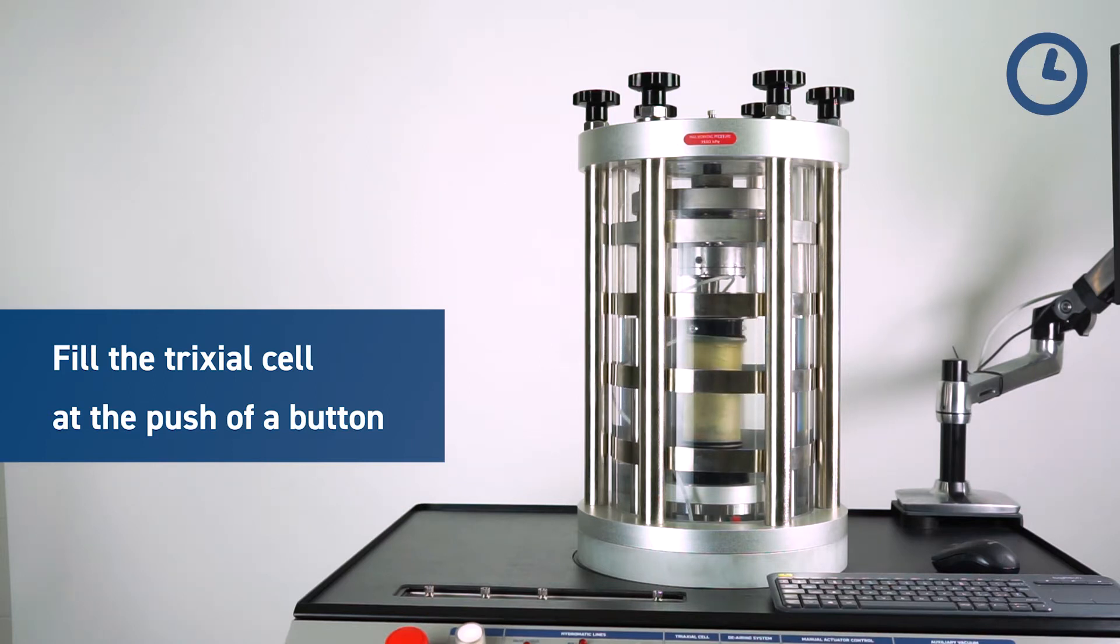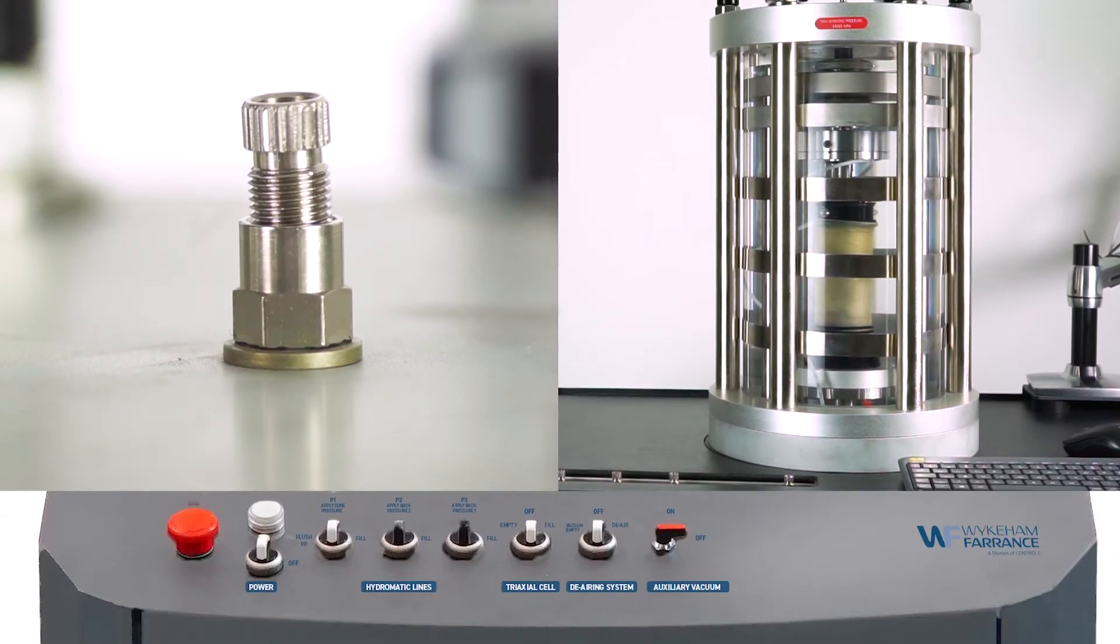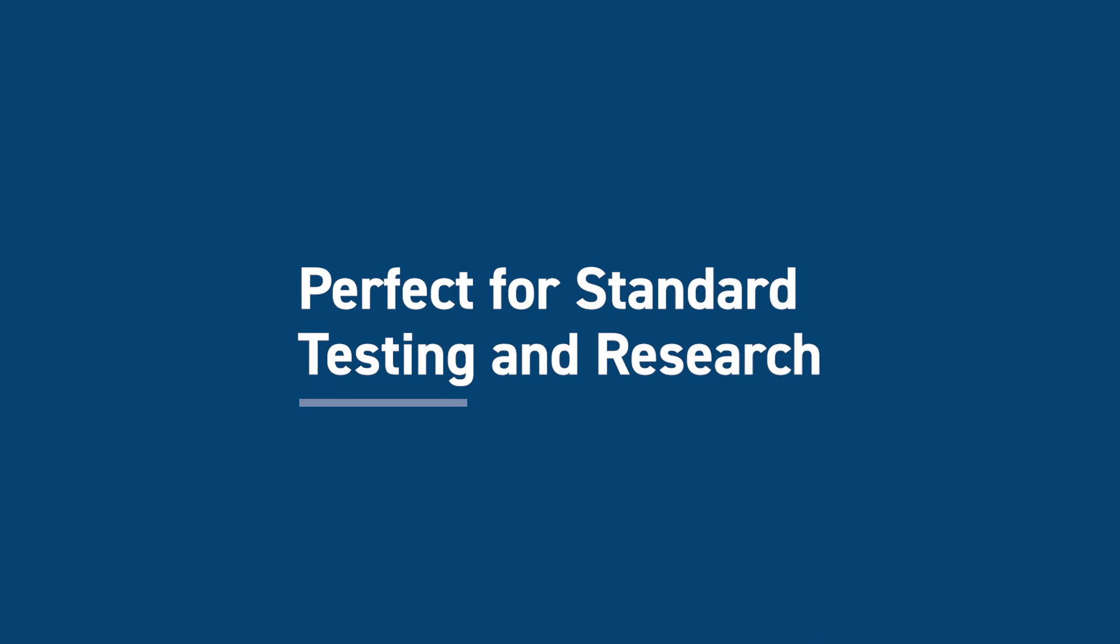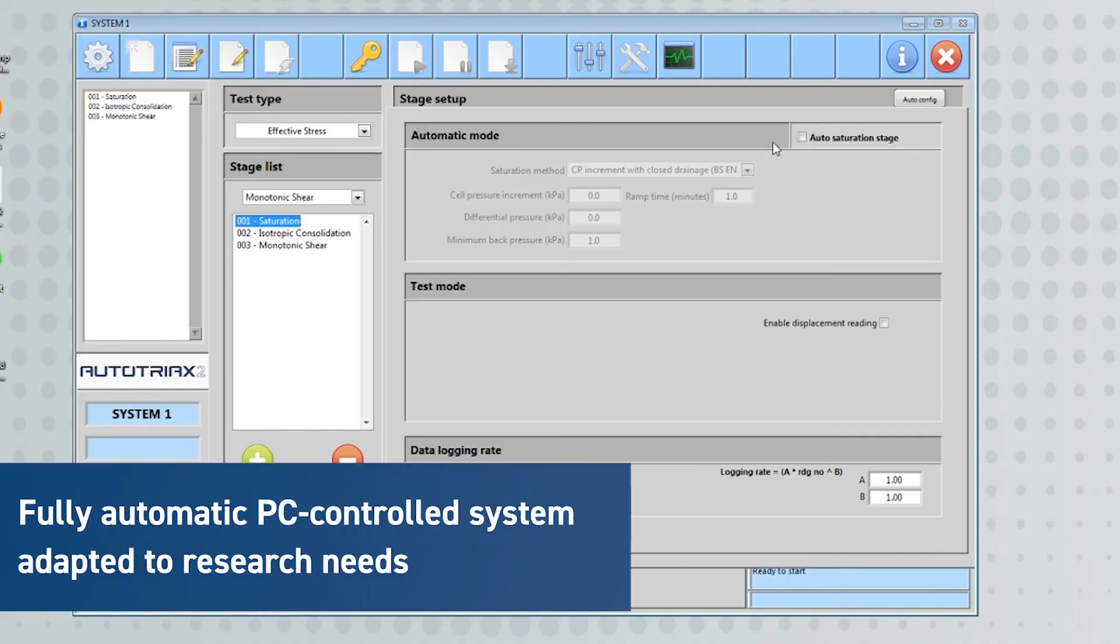The time-consuming filling of the triaxial cell and pressure system can now be performed using the AutoTriax Cube's intuitive control panel. The AutoTriax Cube can complete the whole test from saturation to failure in full automatic mode without any interruption, saving time, minimizing operator intervention, and assuring total accuracy.